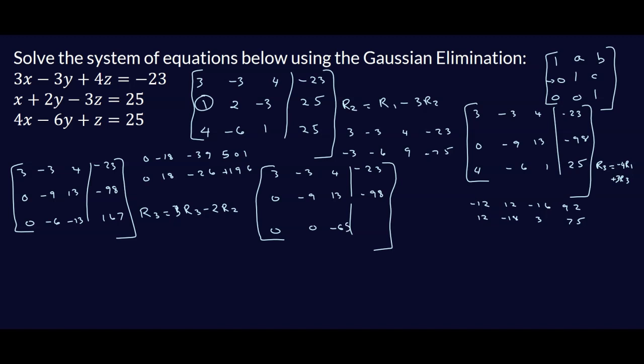Something looks off, so let's go back and verify. Reviewing the computation for row 2 — row 1 minus 3 times row 2 — we confirm: 3, negative 3, 4, negative 23 minus negative 3, negative 6, 9, negative 75 gives 0, negative 9, 13, negative 98. That checks out.